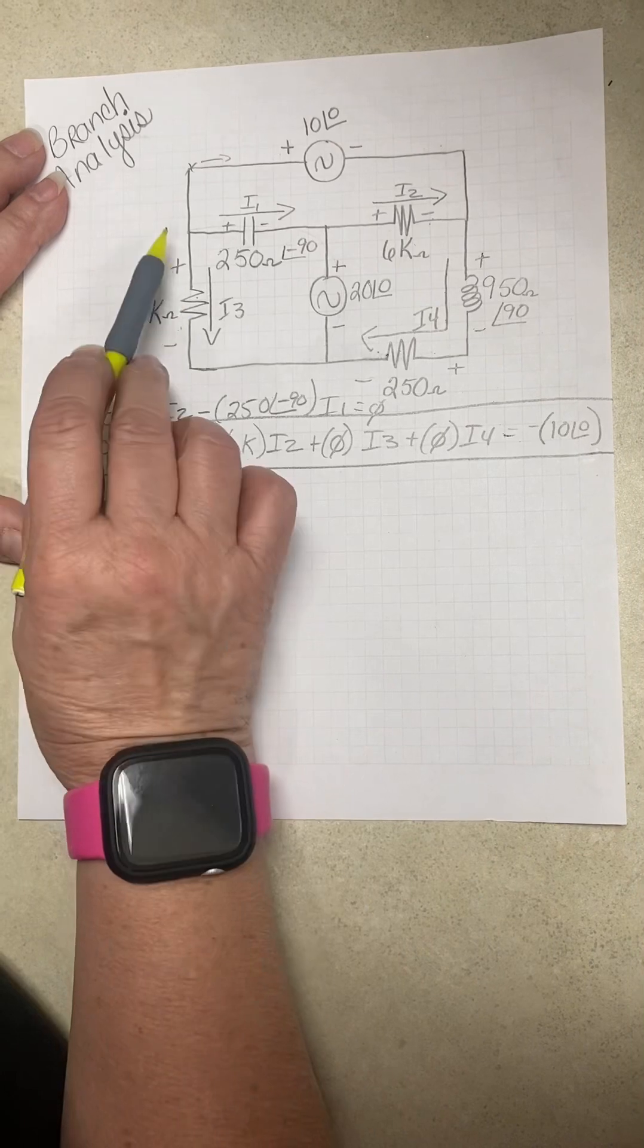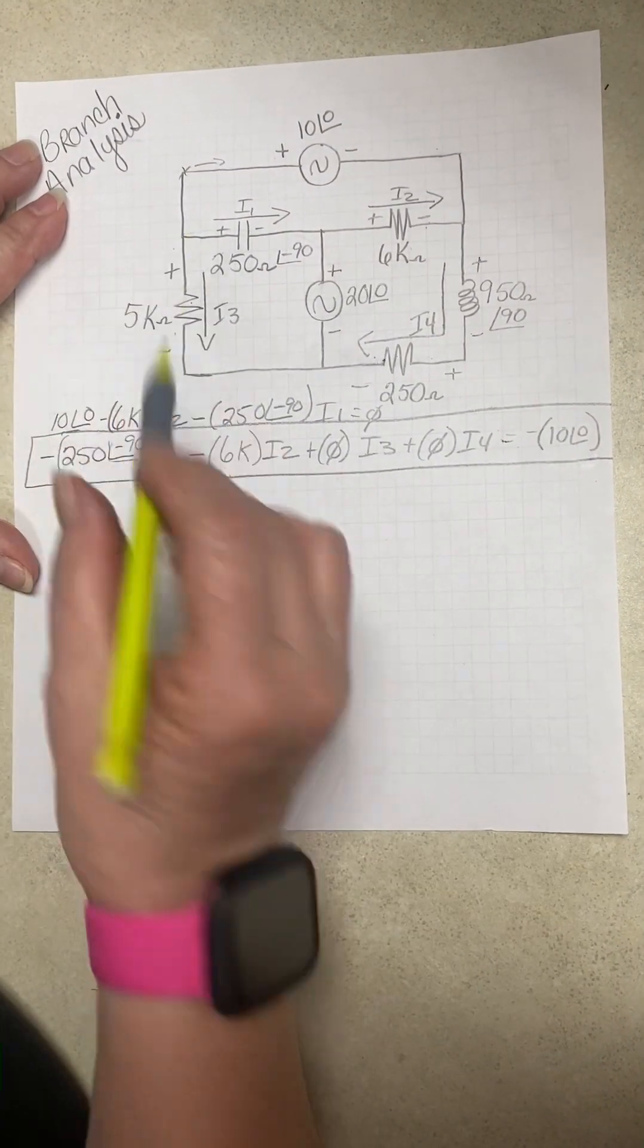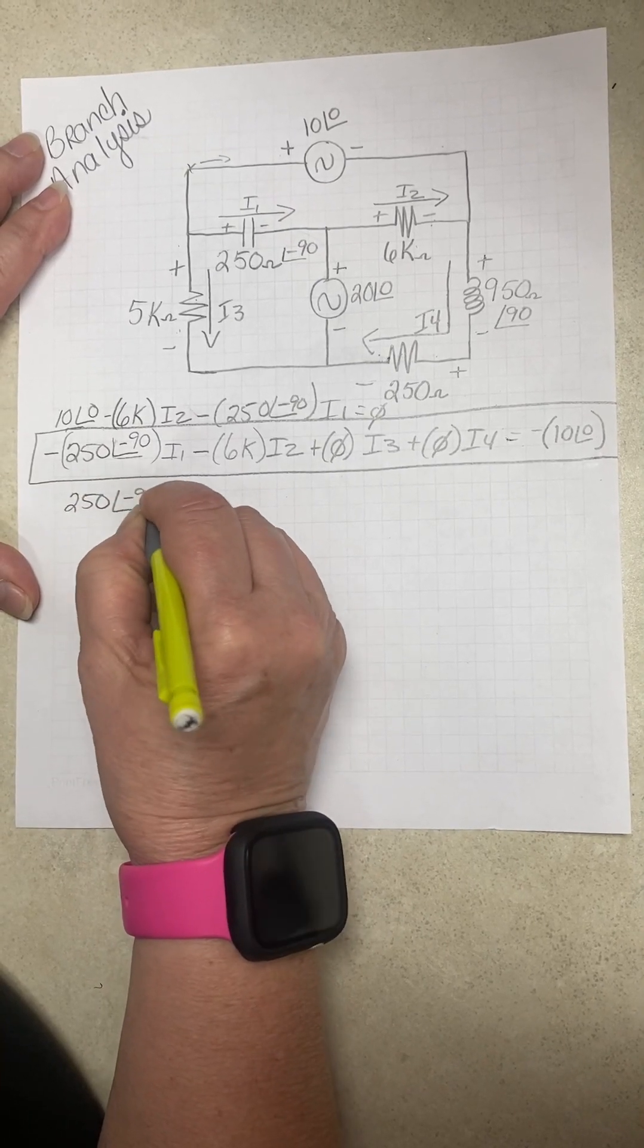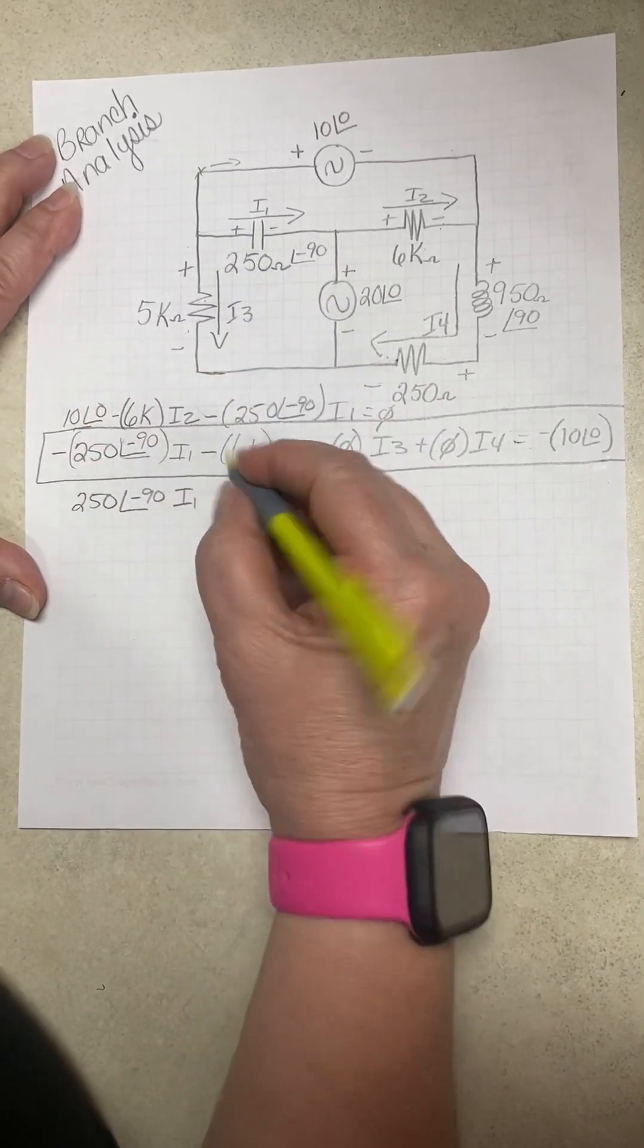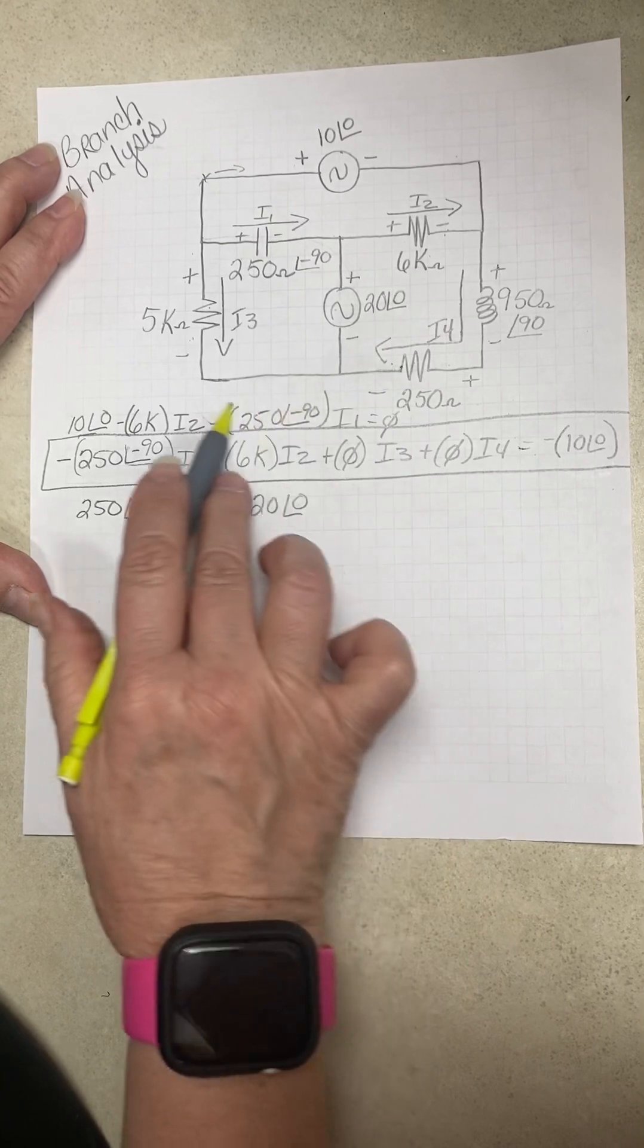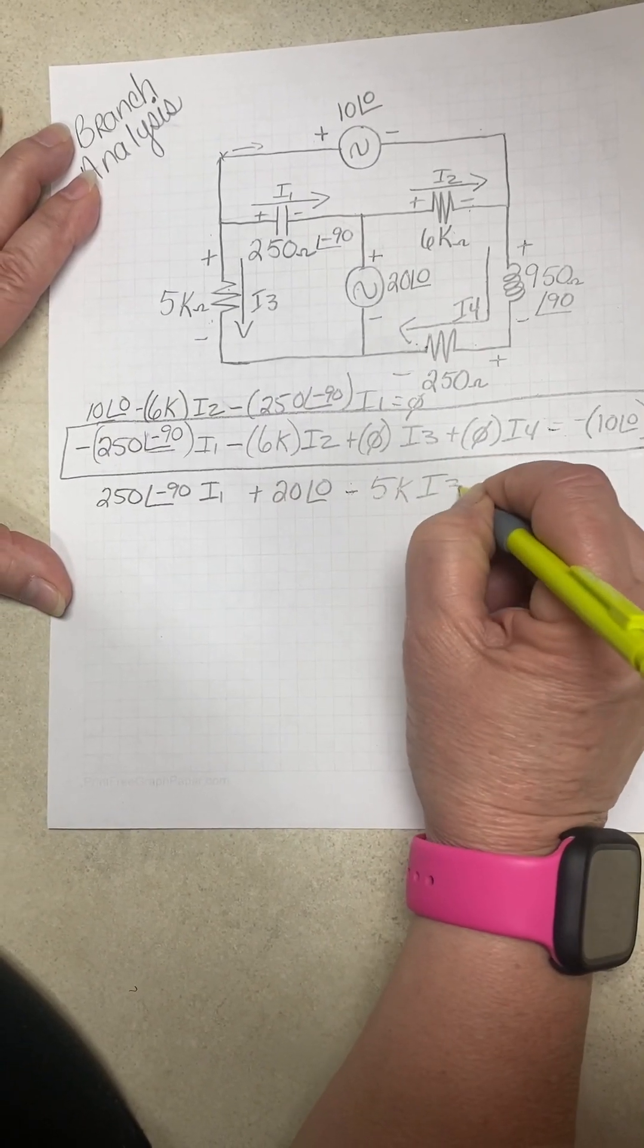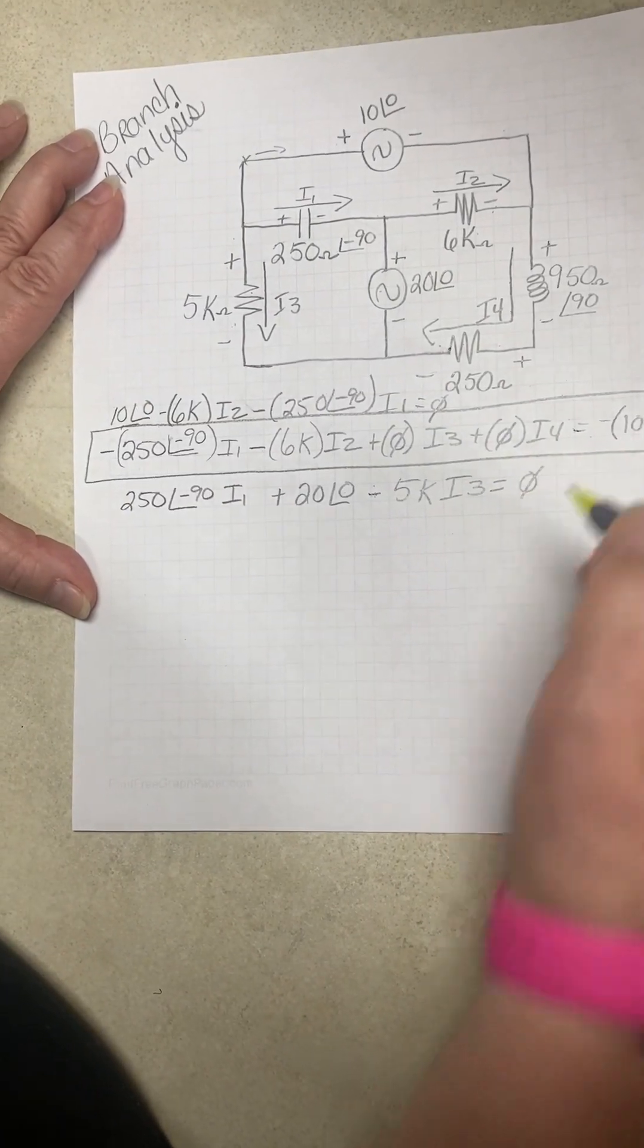Okay, then we're going to start here, and we're going to go around writing everything down. So we have 250 at an angle of negative 90, I1 plus 20 at zero minus 5K, I3, and now we're back here, so we set it to zero.